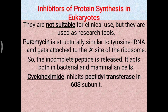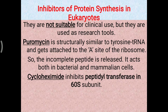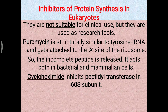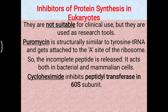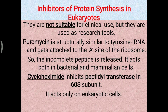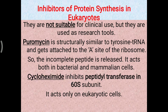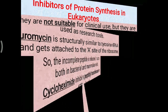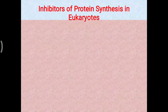Cycloheximide inhibits peptidyl transferase activity in the 60S subunit, which is the larger subunit of the eukaryotic ribosome and is specific to mammalian cells. Because it acts only on eukaryotic cells, it is also not utilized in clinical practice and is only used as a research tool.